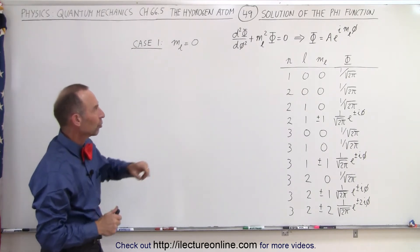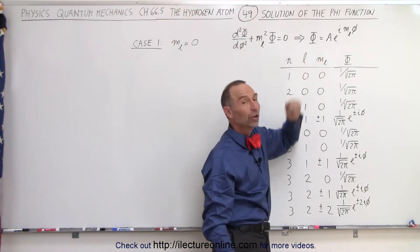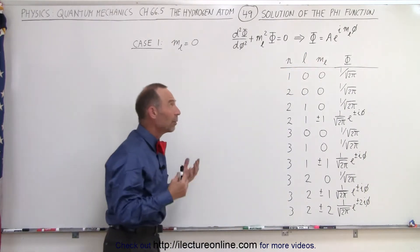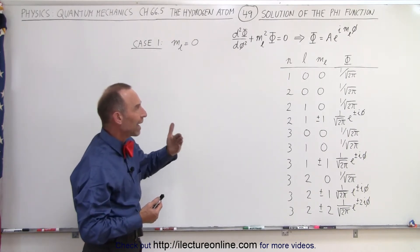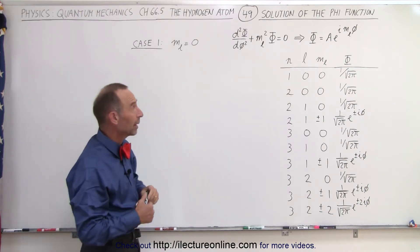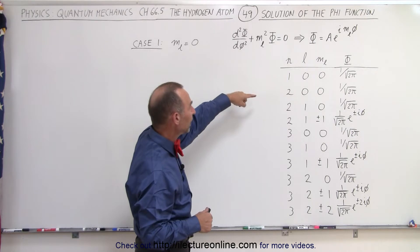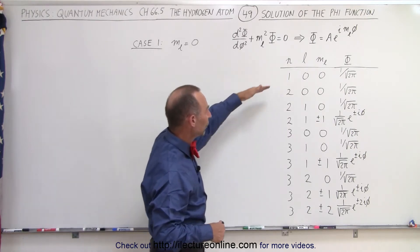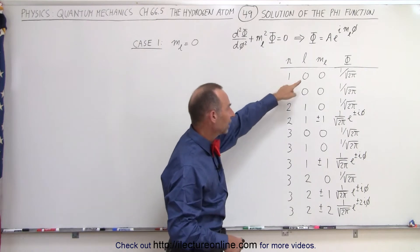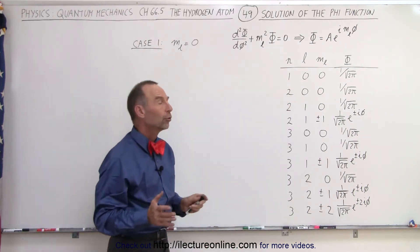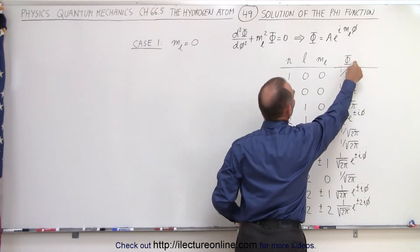We're going to start with the solution to this differential equation, which we found in a previous video. Now we're going to find what the value of that function is for various values of m sub l — the orbital magnetic quantum number. We already have the solutions drawn on the board for various values of n, l, and m sub l.